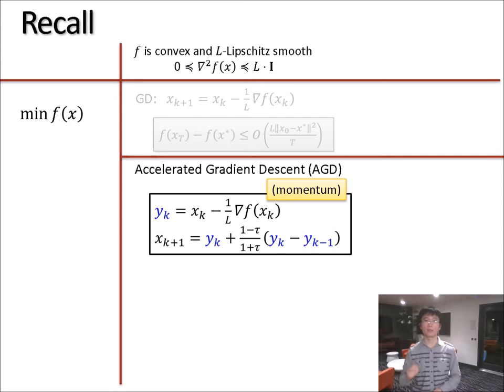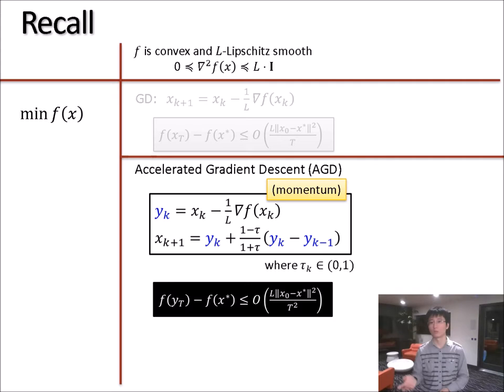This is why accelerated gradient descent is also referred to as the momentum method. If you choose the momentum parameter appropriately, say 2 over k plus 2, then you get a method that converges quadratically faster than gradient descent in rate 1 over t squared.